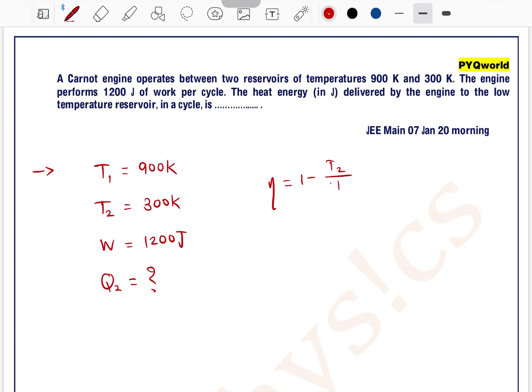We know that the efficiency of a heat engine is equal to 1 minus T2 by T1 which is equal to W by Q1.